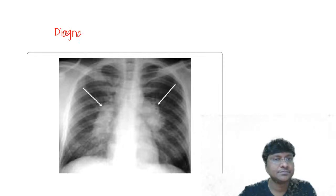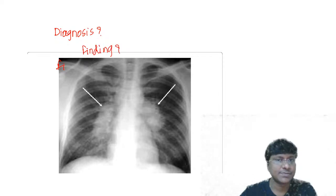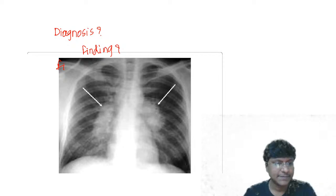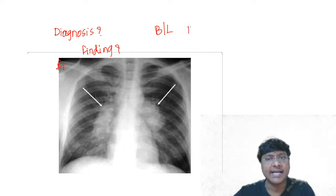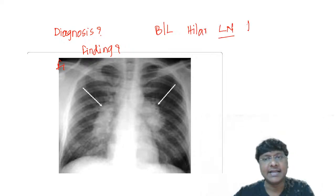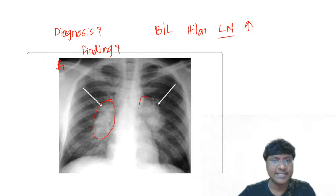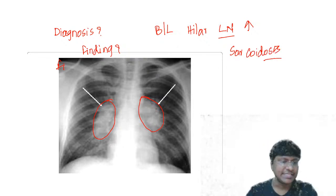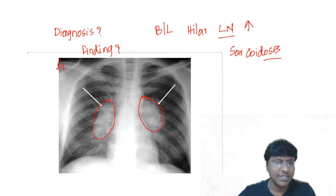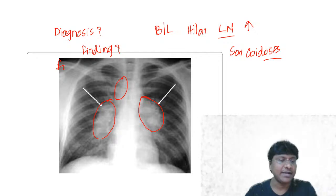The next X-ray shows bilateral hilar lymphadenopathy, seen in patients with sarcoidosis. You can also see the 1-2-3 sign with enlarged paratracheal lymph nodes - that is the lambda sign in sarcoidosis.